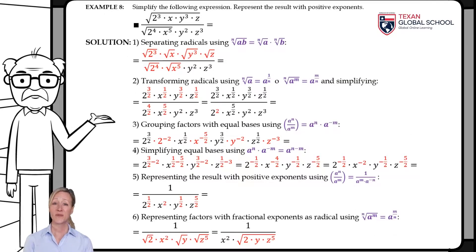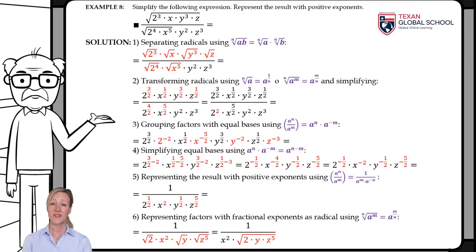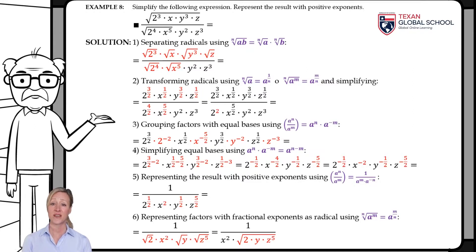In the last example, we simplify the given expression. Since we have several factors within a radical, we separate each factor into a radical with the same index using the specified radical law. We then transform all radicals to bases with fractional exponents and simplify fractions. We group equal bases by moving all denominator factors with a change of sign, and simplify each number and variable to a single base by adding or subtracting exponents. Finally, we represent with positive exponents and express fractional exponents as radicals.